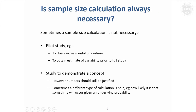Before I go into the actual calculations, it's probably worth getting out of the way — and I said this in the last session — that sample size calculation is not actually necessary in some situations. Certainly not necessary to do it in the way I'm going to consider, which is to obtain statistical significance, and that's when the main objective of the study isn't to get a statistically significant result. It might be to do a pilot study, for example, just to check out the procedures for the experiment. You might not know how variable the data are, which is an essential ingredient for sample size calculation, so it might be worthwhile doing a small study just to get a feel for how variable the measurements are.